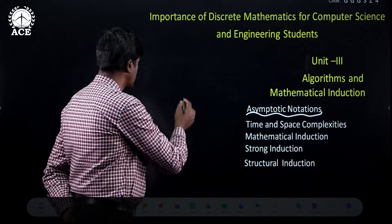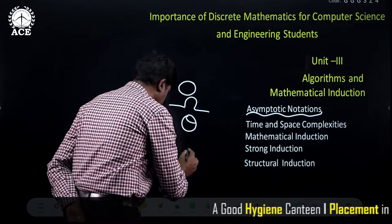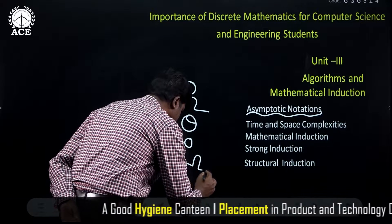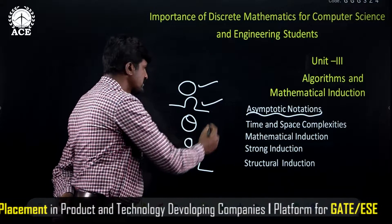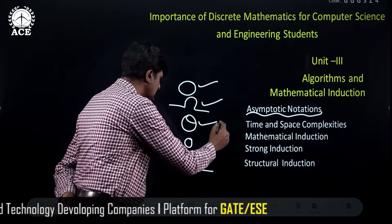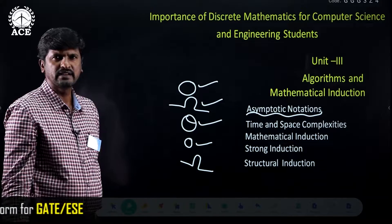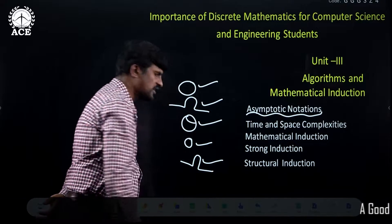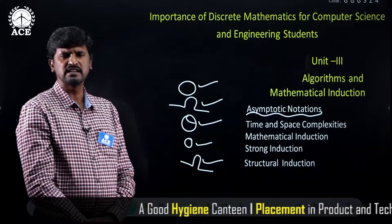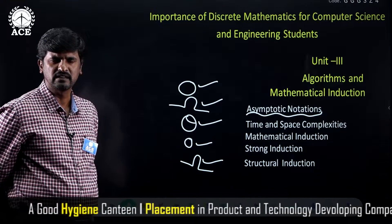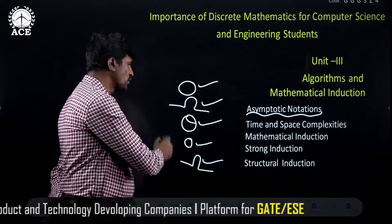There are some asymptotic notations: Big O, Big Omega, Big Theta, Small O, and Small Omega. Big O notation gives the upper bound, Big Omega gives the lower bound, and Big Theta gives the average bound. Small O gives the tight upper bound and Small Omega gives the tight lower bound. The algorithm is analyzed in terms of time complexity and space complexity, which are found using these asymptotic notations.